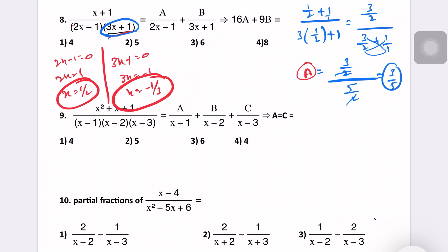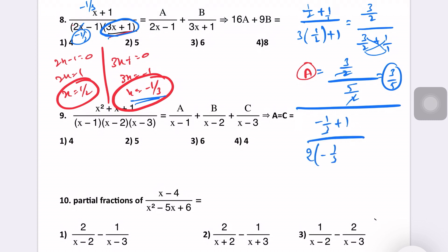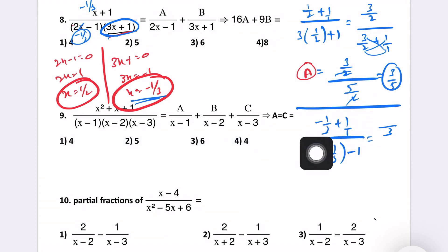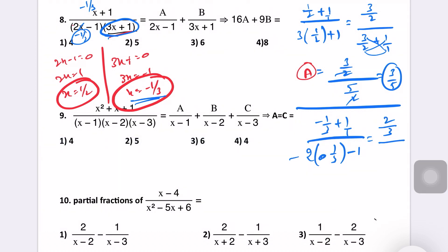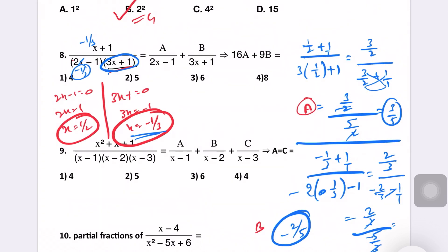Next question: (x plus 1) by (2x minus 1)(3x plus 1) equals a partial fraction. Find 16a plus 9b. For A: 2x minus 1 equals 0, x equals 1 by 2. Substitute x equals 1 by 2. For B: 3x plus 1 equals 0, x equals minus 1 by 3. Substitute x equals minus 1 by 3 to find B. After calculation, a equals 3 by 5 and B equals minus 2 by 5. Now find 16a plus 9b.